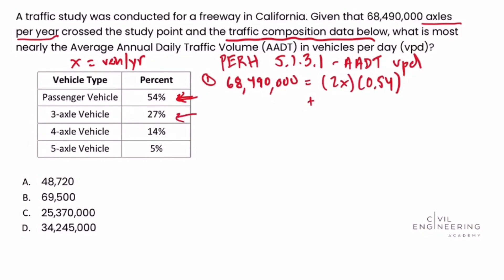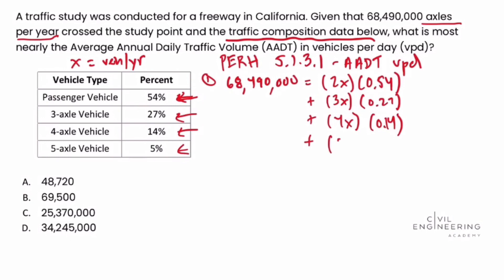The three-axle category is 3x times 27%, the next category is four axles so it would be 4x times 14%, and finally the five-axle category will be 5x times 0.05. So the full equation is: 68,490,000 = 2x(0.54) + 3x(0.27) + 4x(0.14) + 5x(0.05).